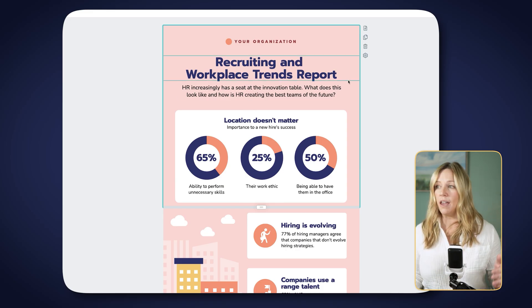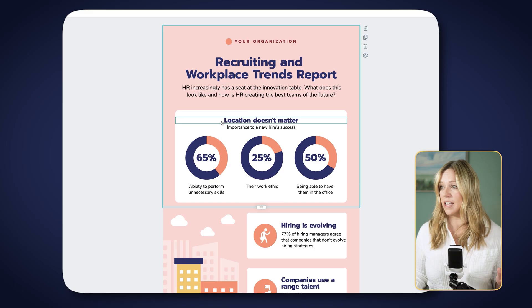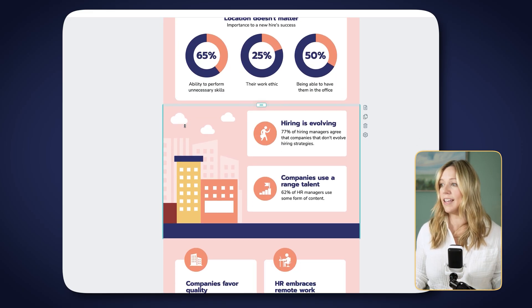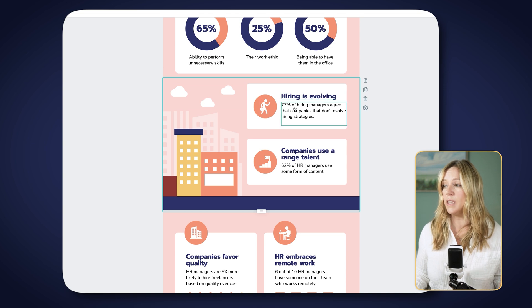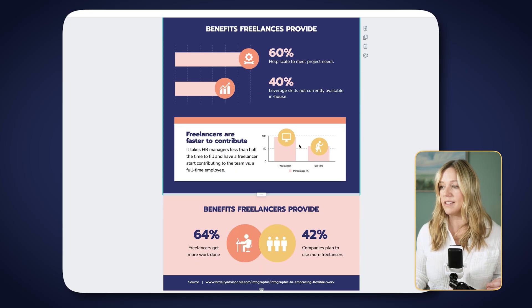Here's a great example: a note on recruiting and hiring trends. The first thing my eye goes to is the graphic with three charts, and I can see the number one message is that location doesn't matter. Once I've processed that, I can keep going through the graphic, which gives me nice bold headlines so I know what else to take away, along with more visuals and bold headlines throughout. If you get hierarchy right, you can be pretty sure your viewer will get the message you want them to get. A good double check: ask yourself, 'If I only have someone's attention for five seconds, what do I want them to get out of this?' Design around that answer.